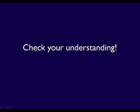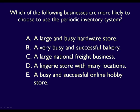Let's check your understanding. Remember to pause the video and answer the question before I tell you the answer. Which of the following businesses is more likely to use the periodic inventory system? The answer is not C — a freight business provides a service, so they would not use an inventory tracking system. The answer is not E — an online hobby store has many products and needs to know what is in stock at all times to meet customers' needs. The answer is not A — a large and busy hardware store would need to know what to reorder, and a perpetual inventory system would give them that information daily.